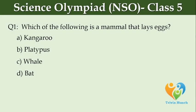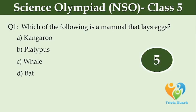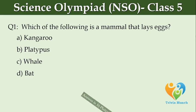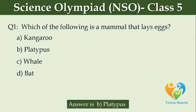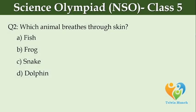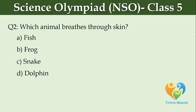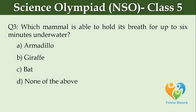Which of the following is a mammal that lays eggs? Option A: kangaroo. Option B: platypus. Option C: whale. Option D: bat. Which animal breathes through skin? Option A: fish. Option B: frog. Option C: snake. Option D: dolphin.